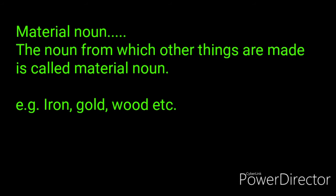Material noun: the noun from which other things are made is called material noun. If we are able to make other things from a noun, that is a material noun. Like 'iron' — we make windows, doors, etc. from iron. 'Gold' — we make many kinds of ornaments using gold. 'Wood' — we make many things using wood. Remember, material nouns are always uncountable nouns — we cannot make their plural. We cannot say irons, golds, etc.